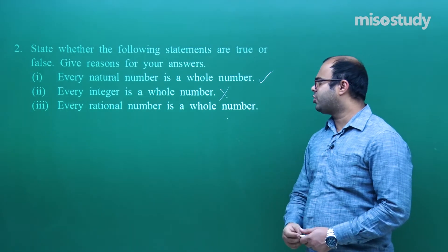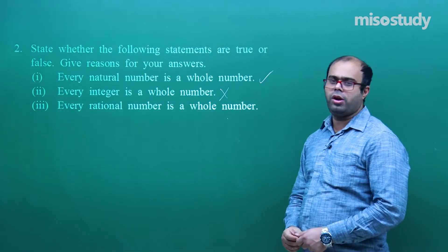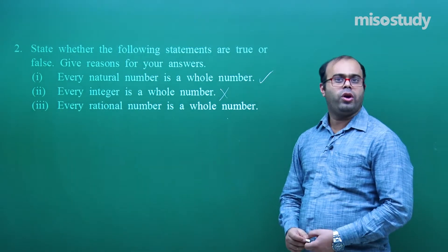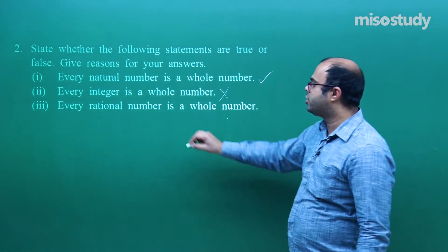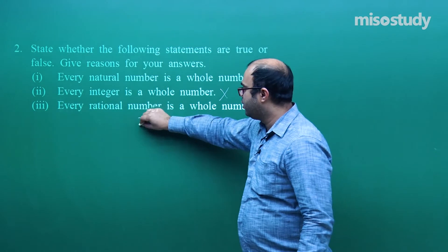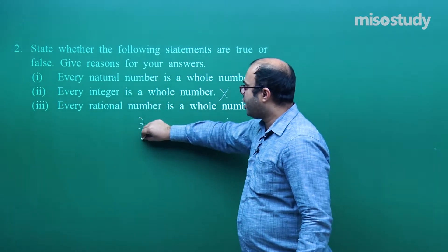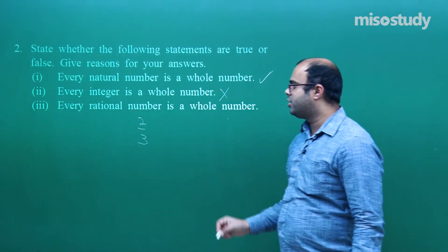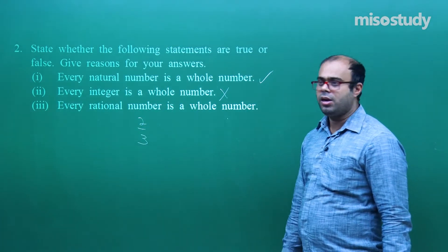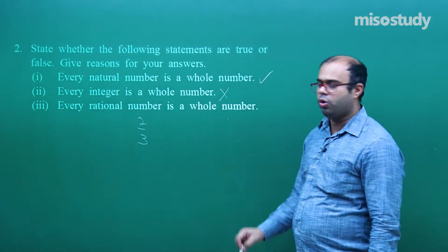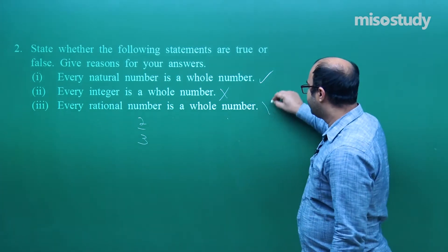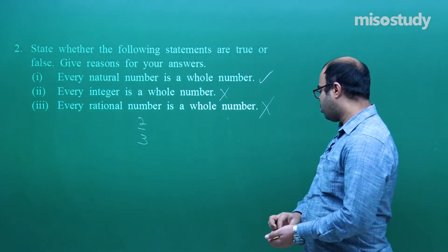Every rational number is a whole number. No — every rational number is not a whole number. For example, 2/3 is a rational number but it is not a whole number. So this statement is wrong.